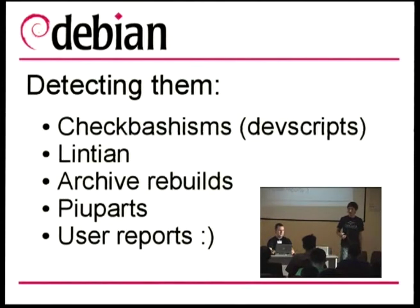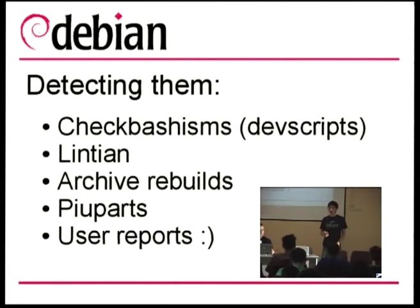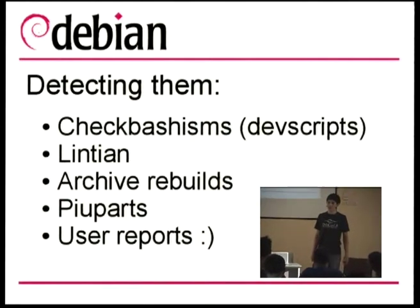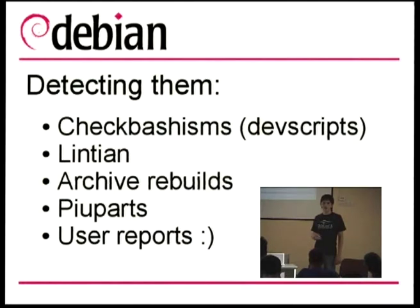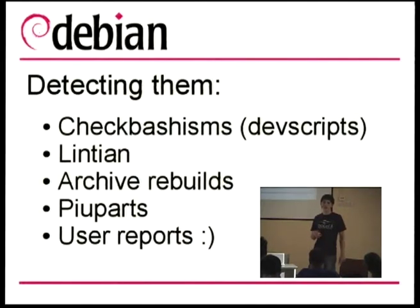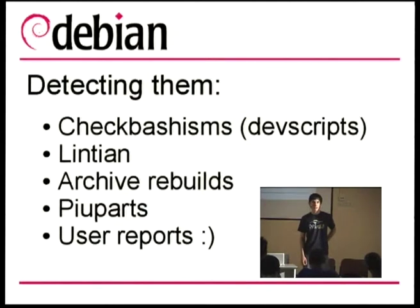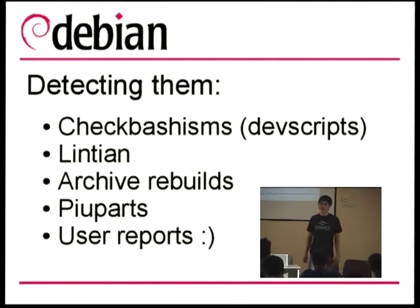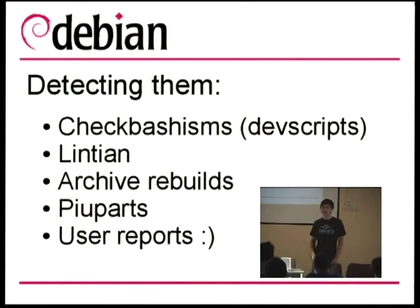So how do we detect them? There are a set of tools that can be used to detect those bashisms and other problems that will affect our users. One of the tools is checkbashisms from the devscripts package. Another tool is Lintian, which at the moment only checks the maintainer scripts for bashisms, but there are plans to extend these checks to every makefile and every bin/sh script shipped in source and binary packages.